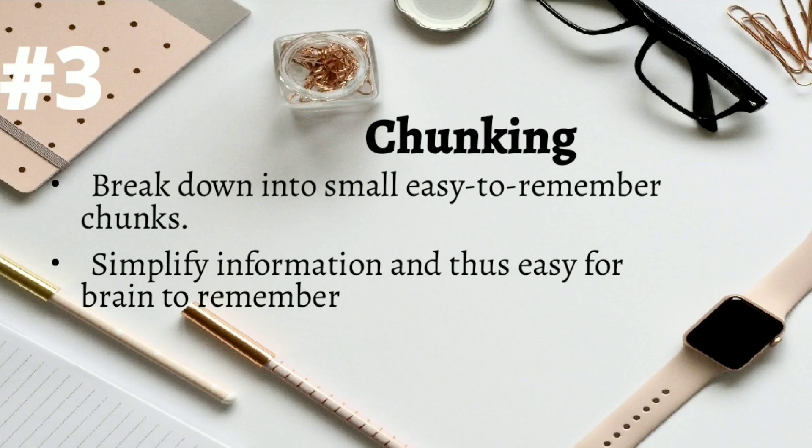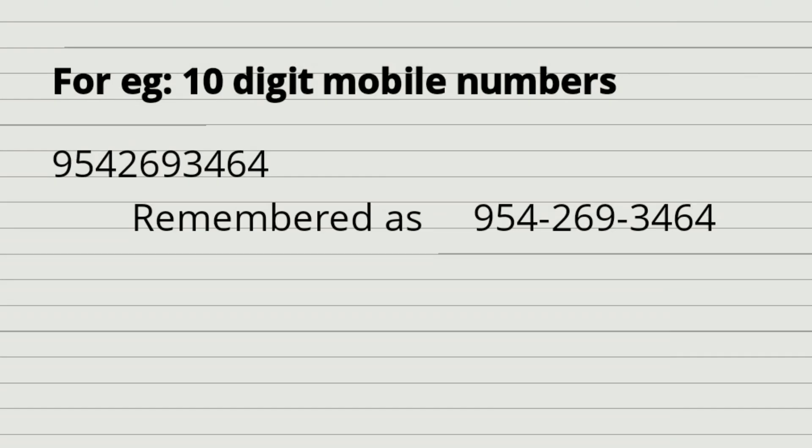Number three: chunking. We break down a big piece of information into small bits or chunks, as this simplification helps the brain remember better. This is something we all use knowingly or unknowingly when remembering phone numbers by breaking them into small chunks.